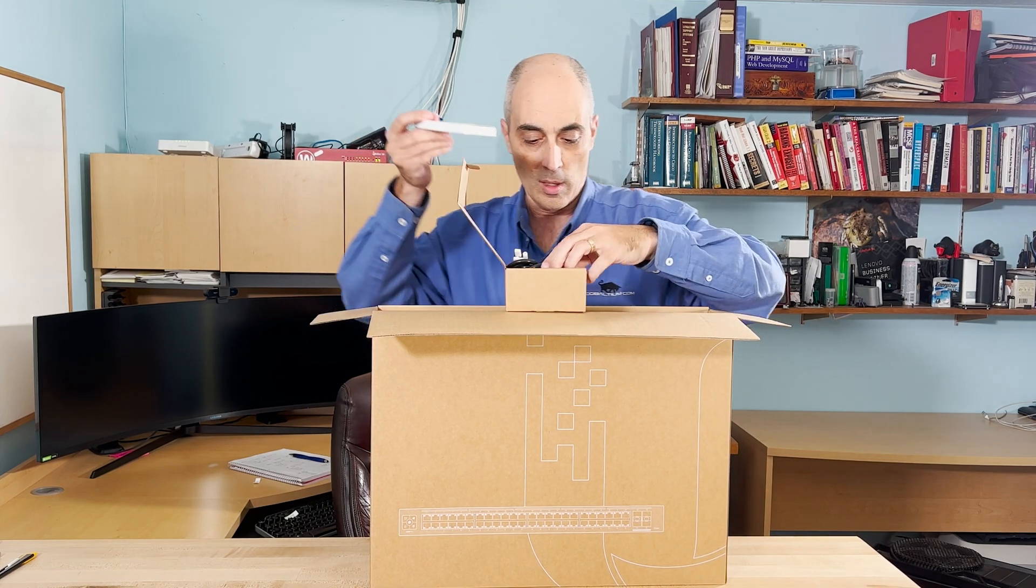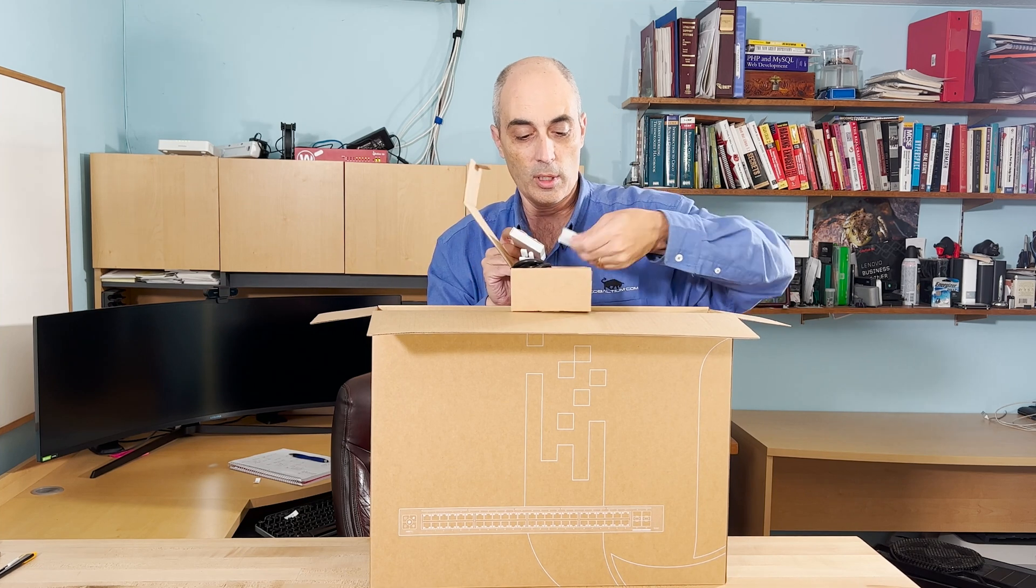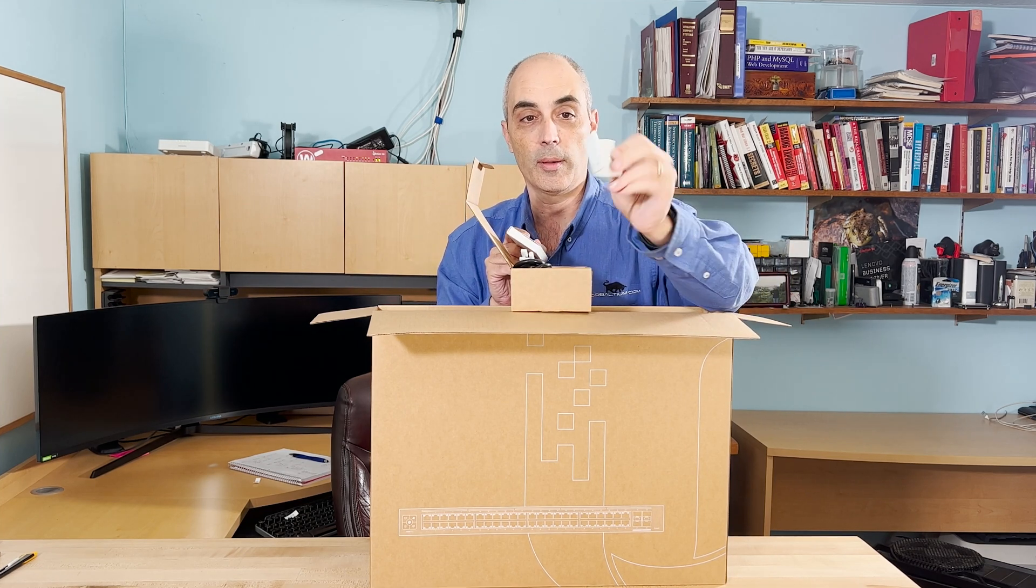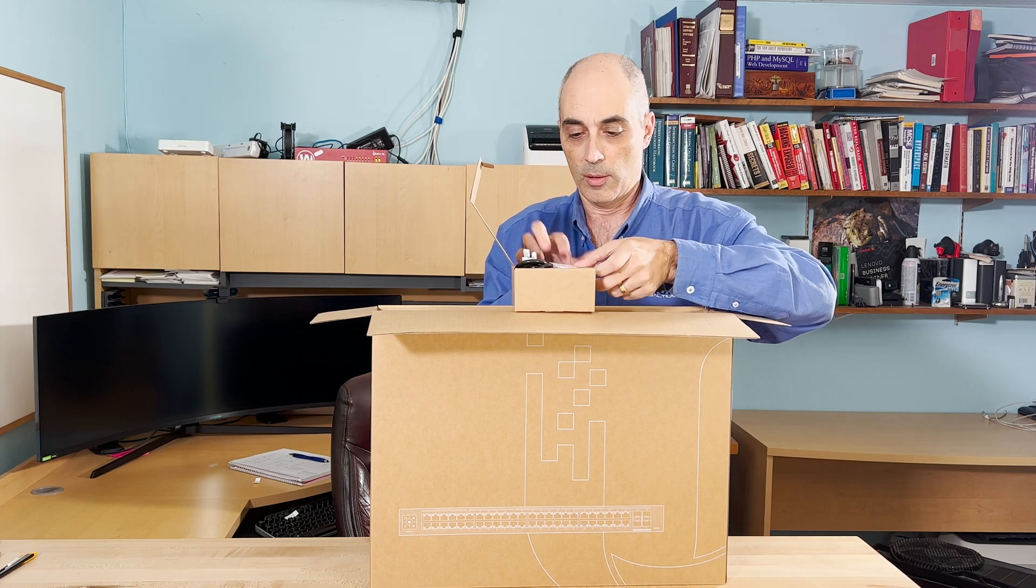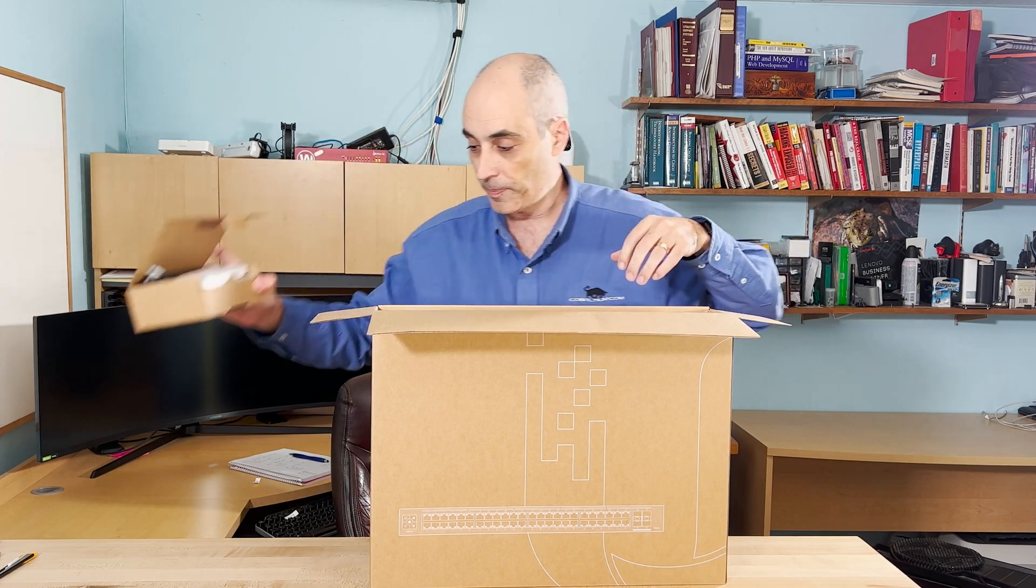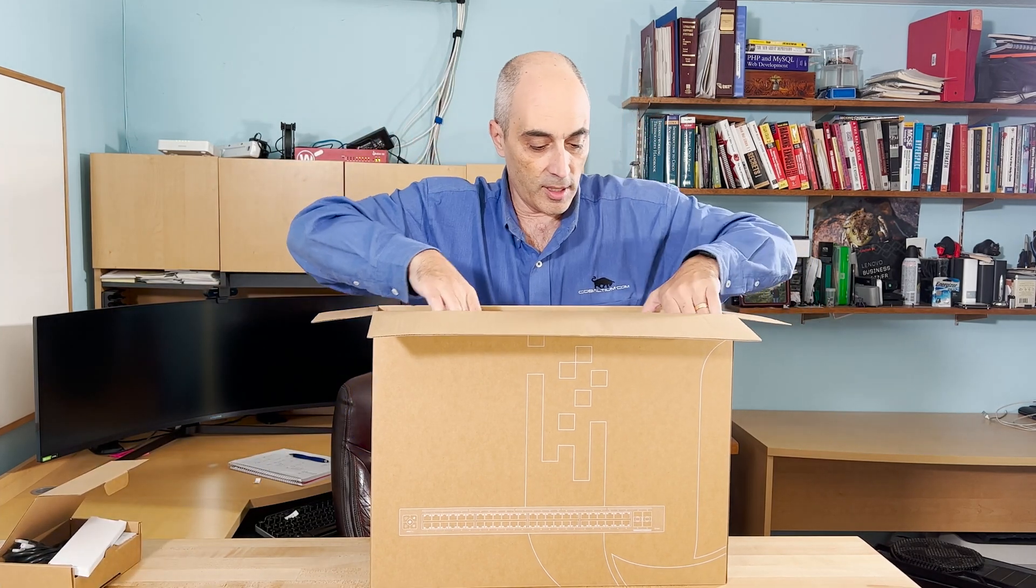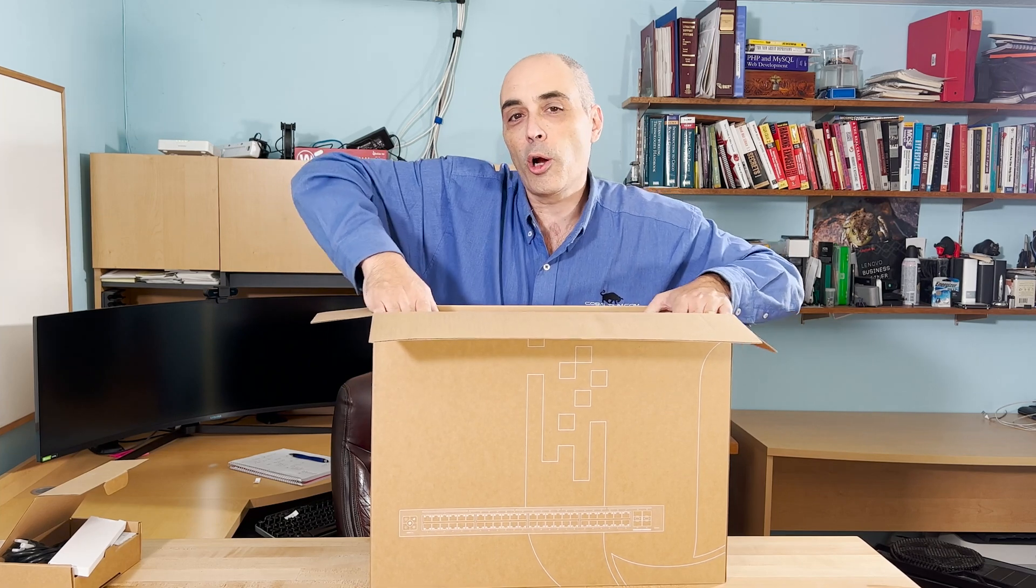So you've got screws for rack mounting and for putting in the sides, and some rubber feet - a nice little kit here. And the rest are what I like to call the ears, but are just the brackets on the side. I'm going to put this aside.